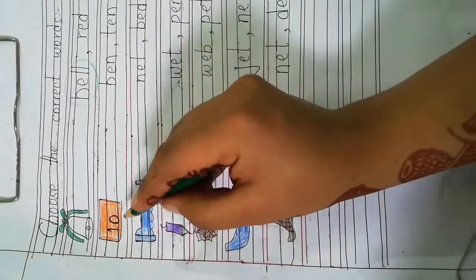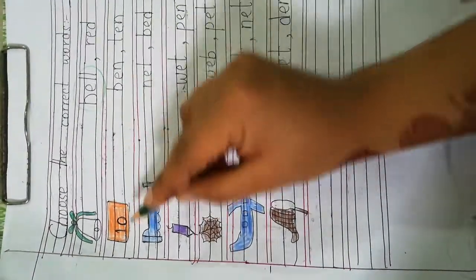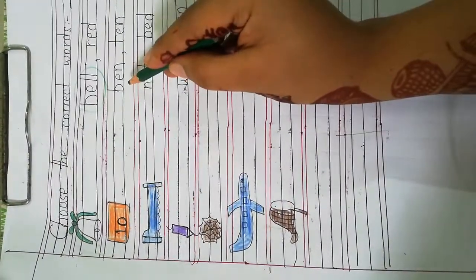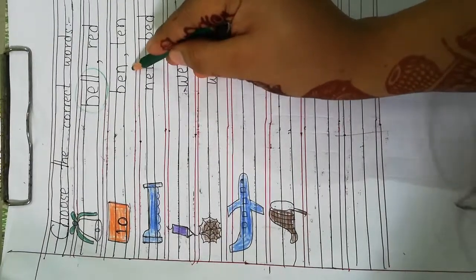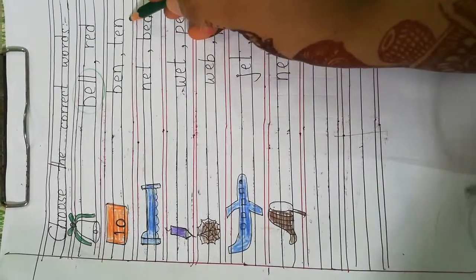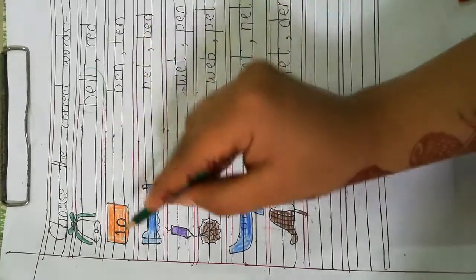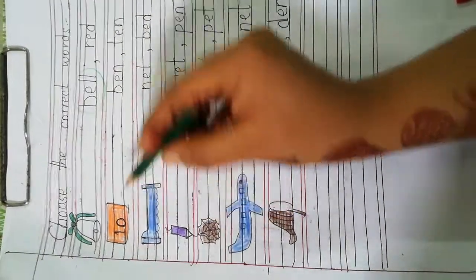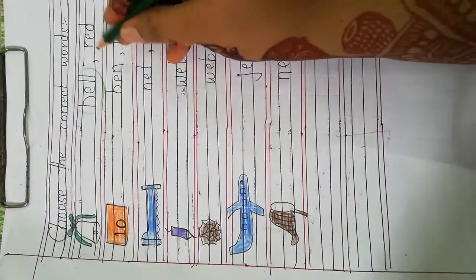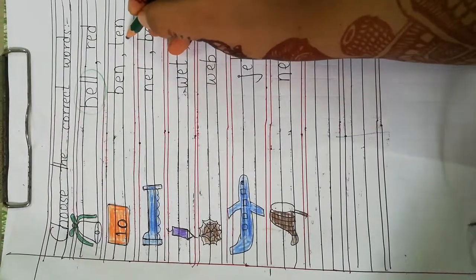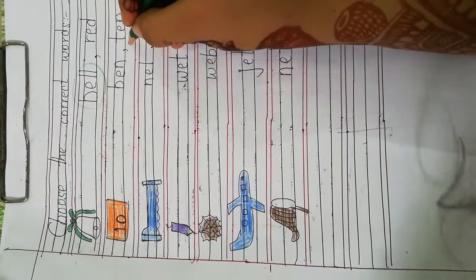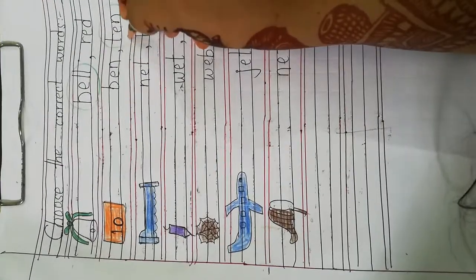Now, next one is ten. B E N bend. T E N ten. Bend ten. So, this is ten. So, we will circle this word. T E N ten. Yes.